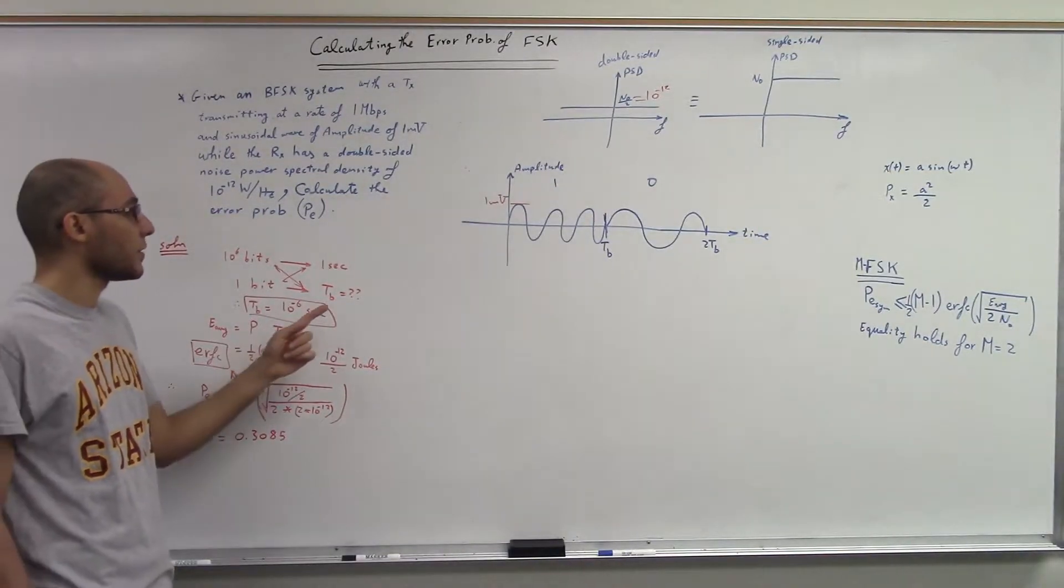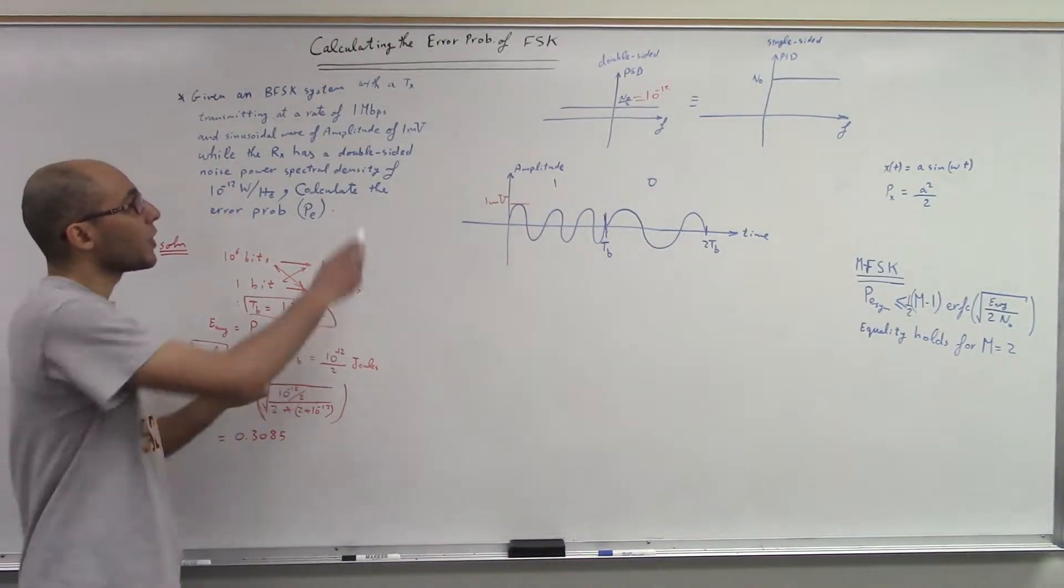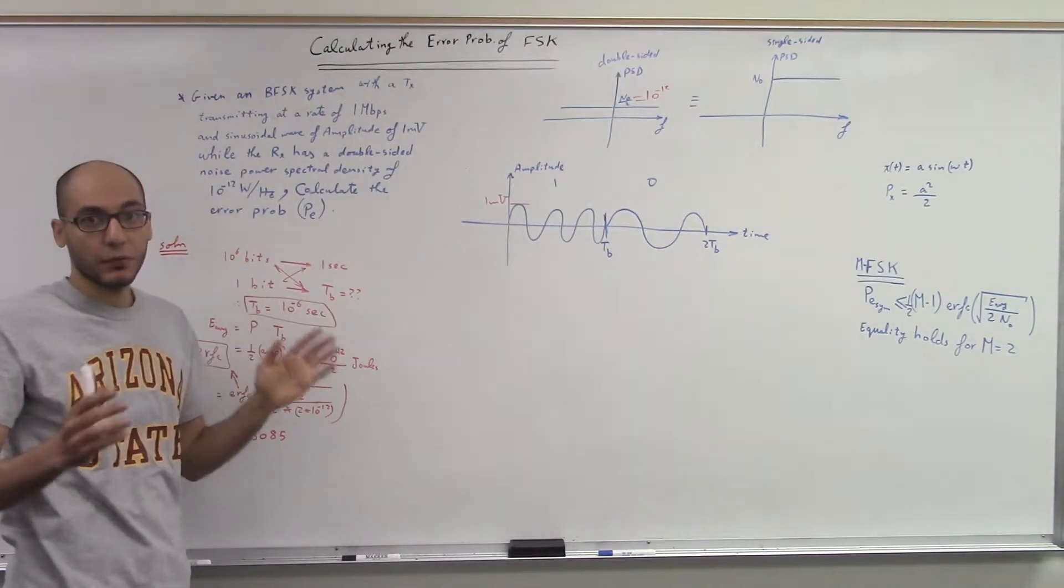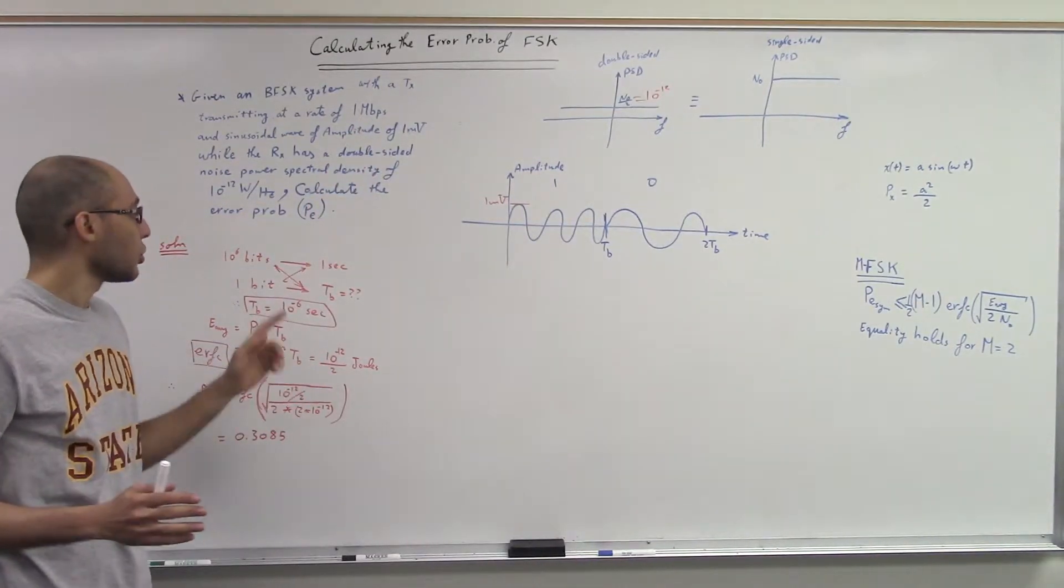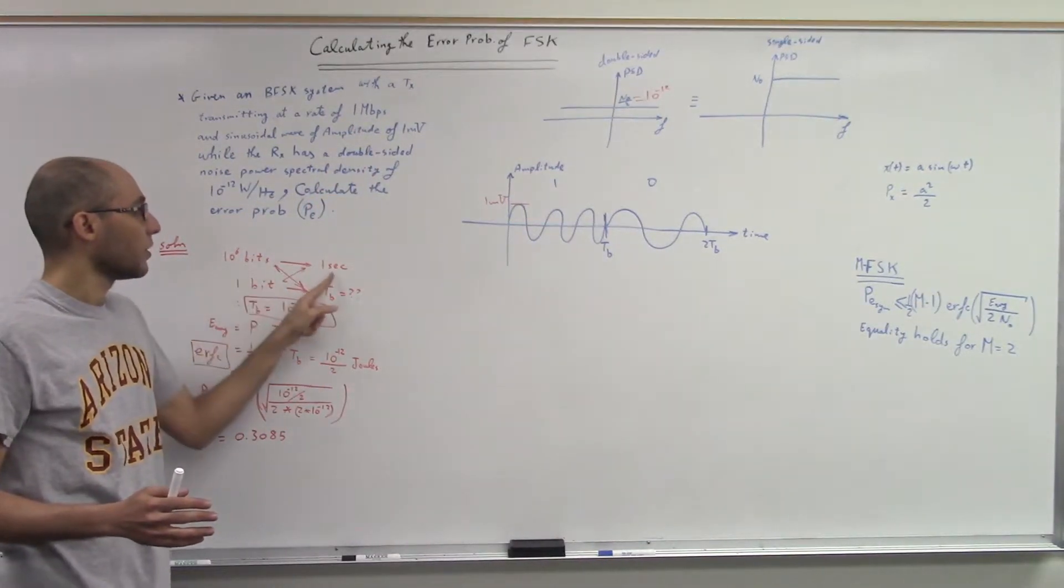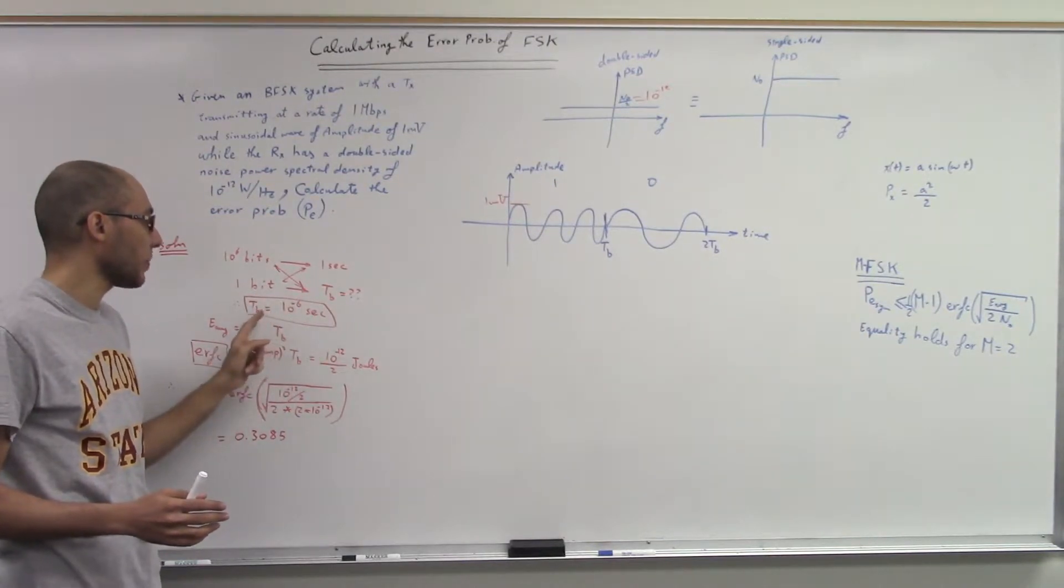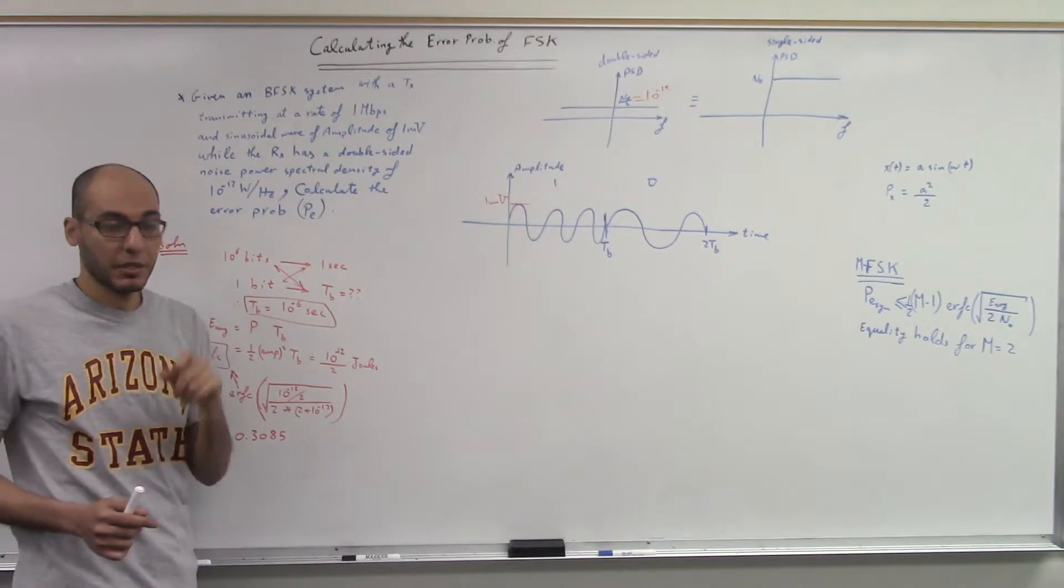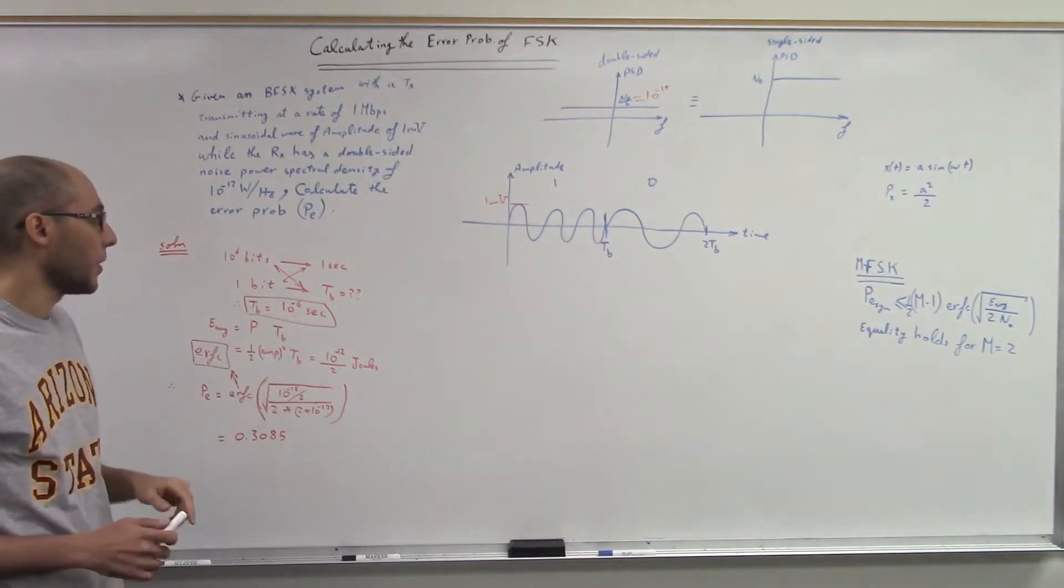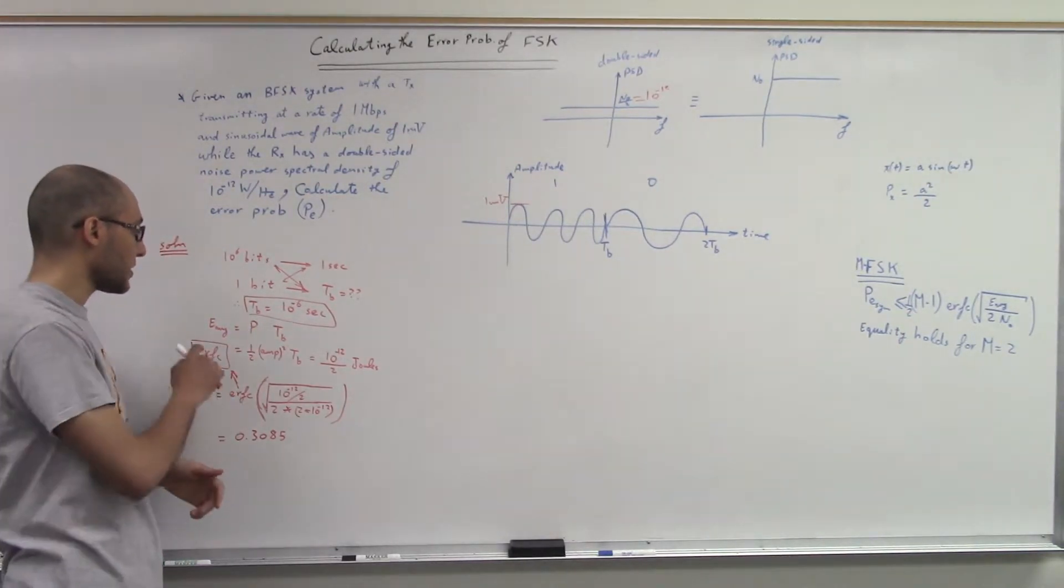Let's first calculate the duration of one bit. We have one million bits transmitted for every second. So one million for every second, so one bit is for how many seconds? Cross multiplication, you end up having T_b, the bit duration, equals 10 power negative 6. So the average energy equals the power, which is half of the amplitude squared.